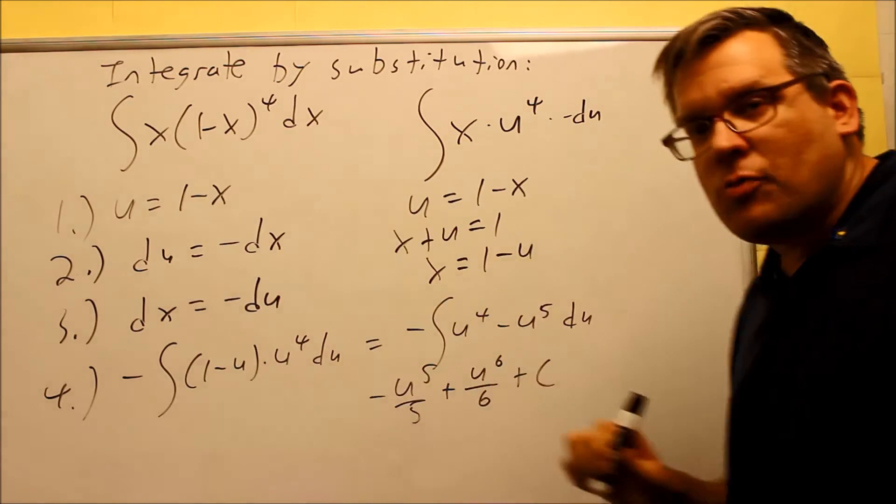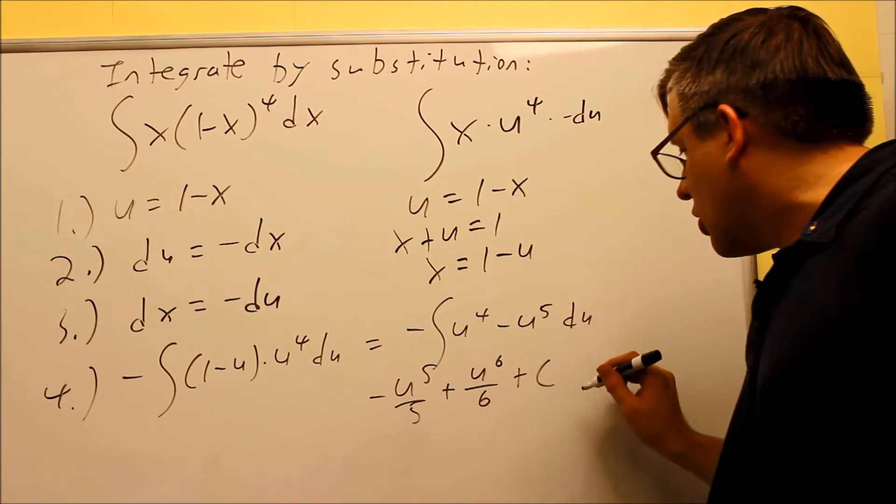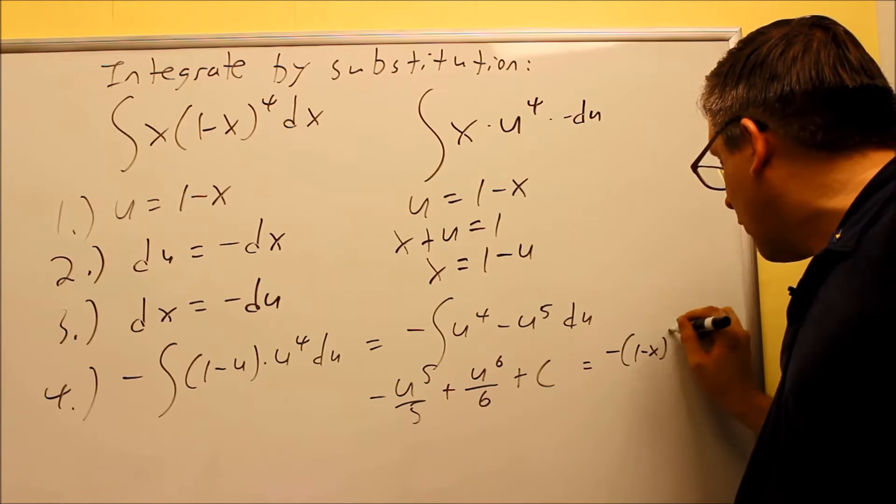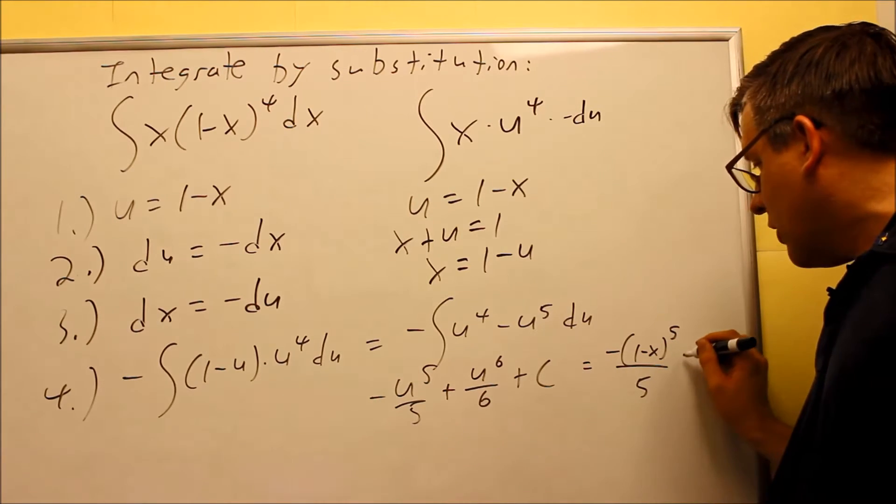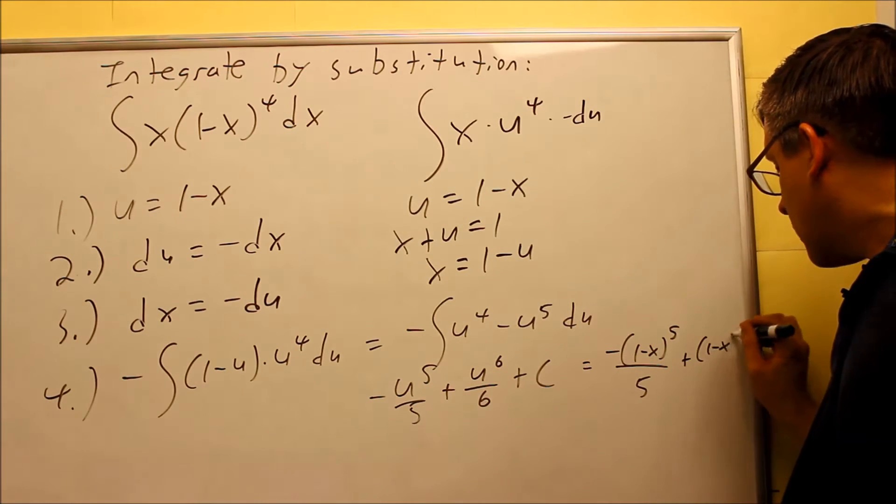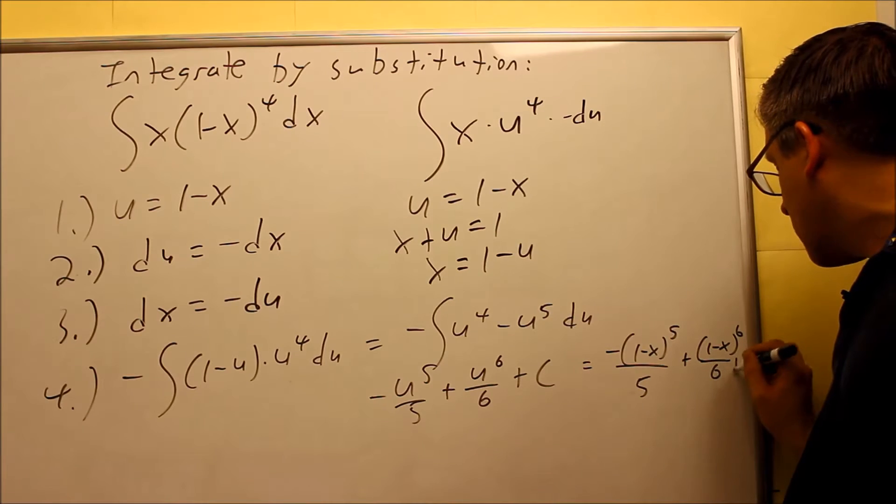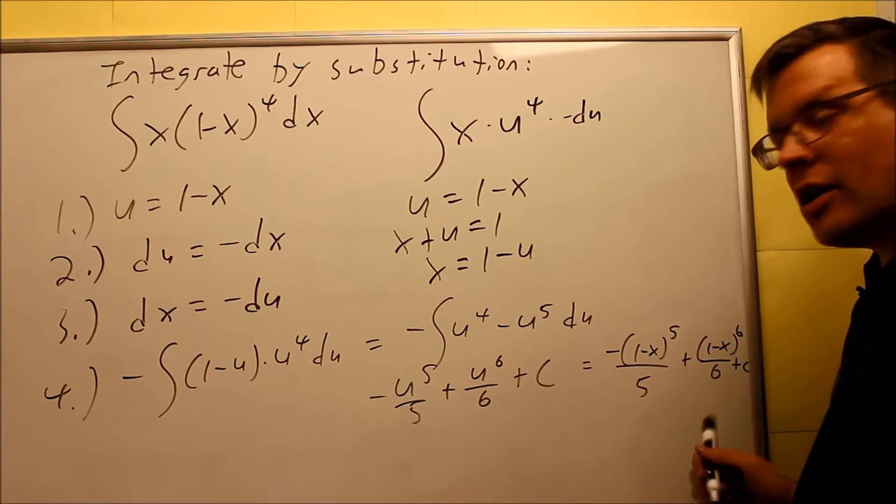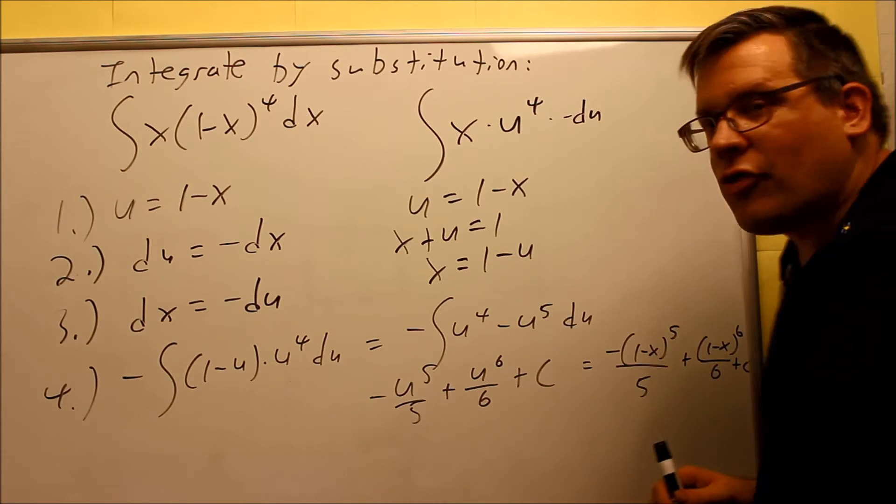So this is what it turns into. Now I just put my U back in, 1 minus X, so I can write that as negative 1 minus X to the 5th power over 5, plus 1 minus X to the 6th power over 6, and then plus C on the end there. This here would be your final answer.